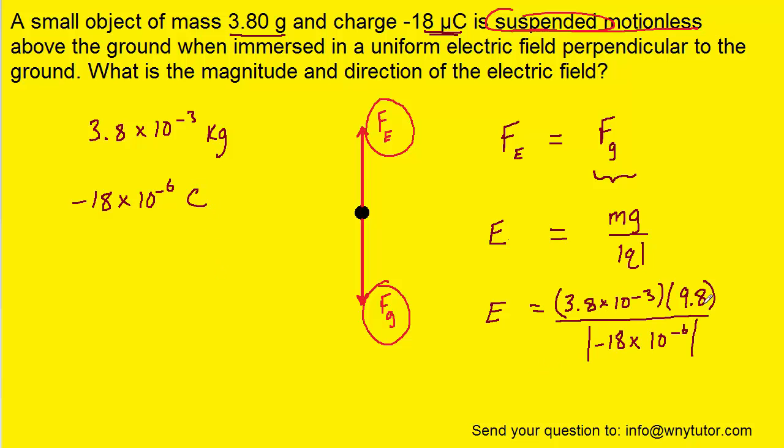And when you crunch that down on your calculator, you should get an electric field of approximately 2.07 times 10 to the positive 3, and the unit of electric field is newtons per coulomb. So that would be the correct answer for the magnitude.